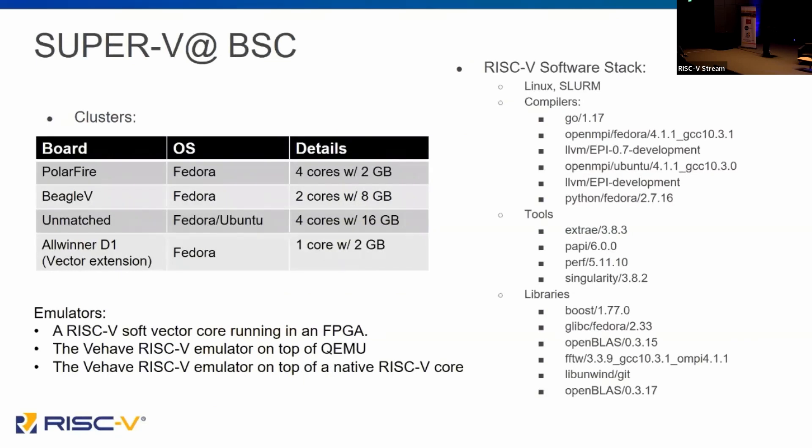What we have today, just as background, is a bunch of different types of boards, anywhere from two gigabytes to 16 gigabytes per socket — giving you enough memory to do a native build on the hardware side. We also have soft cores with vectors in FPGAs if you want to play with the vector extensions, or you can use emulators and QEMU, or a hybrid solution where we couple a scalar RISC-V core with the RVVE RISC-V emulator. These systems are running a traditional high-performance computing stack composed of Linux, Slurm, compilers, tools, and libraries.